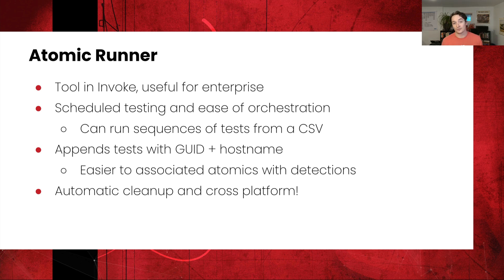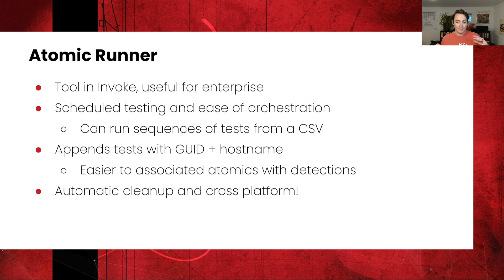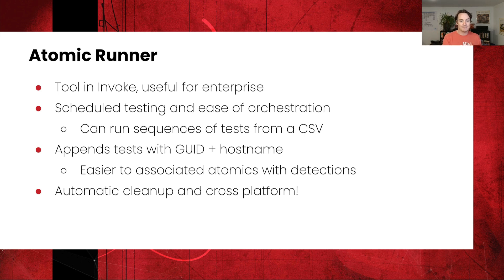Within Invoke Atomic specifically is a tool called Atomic Runner. Atomic Runner is really useful for enterprises because it allows you to run scheduled tests and orchestrate them across different machines. You can set up a sequence of tests within a CSV — it will append GUIDs and host names onto all of those tests, so you can take individual tests on singular machines and tie them back up to detections that may or may not have fired. It also includes automatic cleanup and is cross-platform, so you can use it on Windows, Mac OS, or Linux.